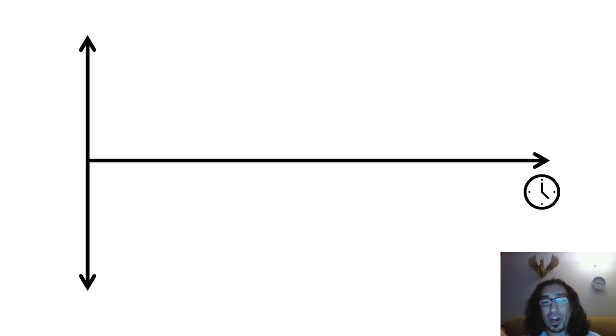So this is the opponent process theory. Over time, when we take a drug, it gives us some kind of positive effect. Otherwise, we usually wouldn't use it.